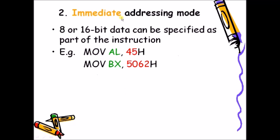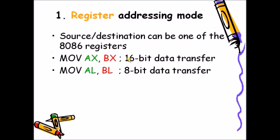In immediate addressing mode, the operand is directly given in the instruction itself. For example, in 'MOV AL, 45H', the value 45H is the operand, which is directly included in the instruction — this is called immediate data, and this addressing mode is called immediate addressing mode. The processor accesses the information directly from the instruction, whereas in register addressing mode it accesses the information from the register.